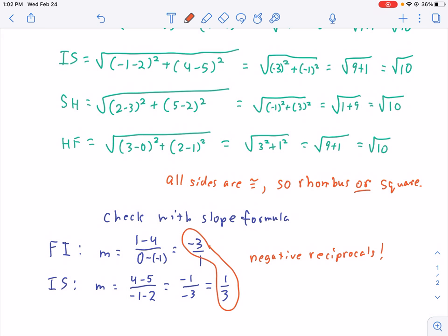Look! Since these are negative reciprocals, that means FI is perpendicular to IS. And if a parallelogram has one 90 degree angle, then that means that it has 4.